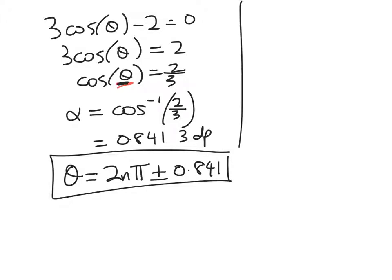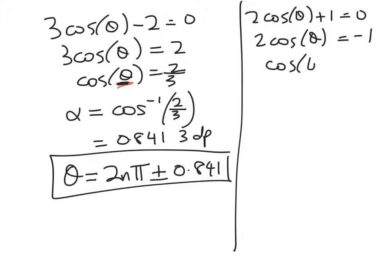Now let's look at the other one. Actually, I can fit it onto the same screen, so we'll do it that way. So 2cosθ + 1 = 0. 2cosθ = -1. cosθ = -1/2.